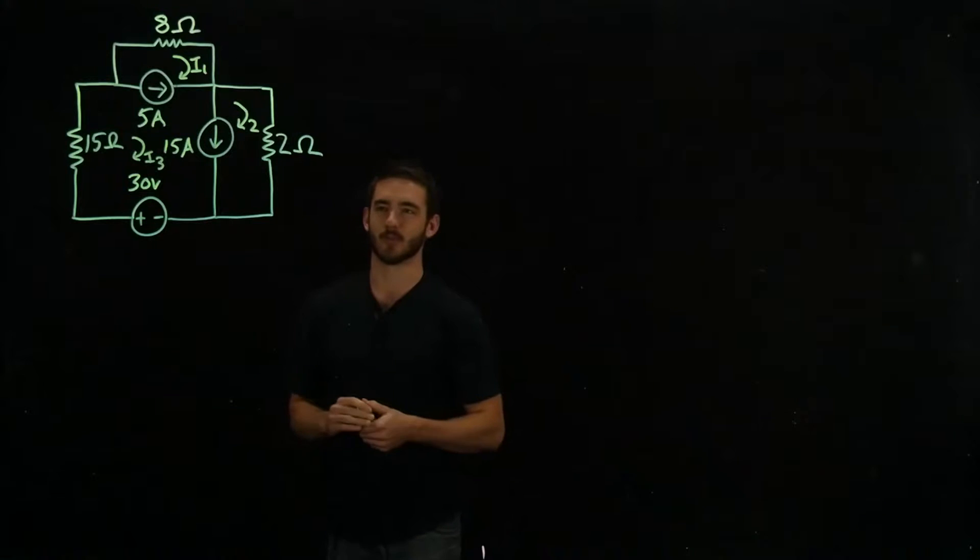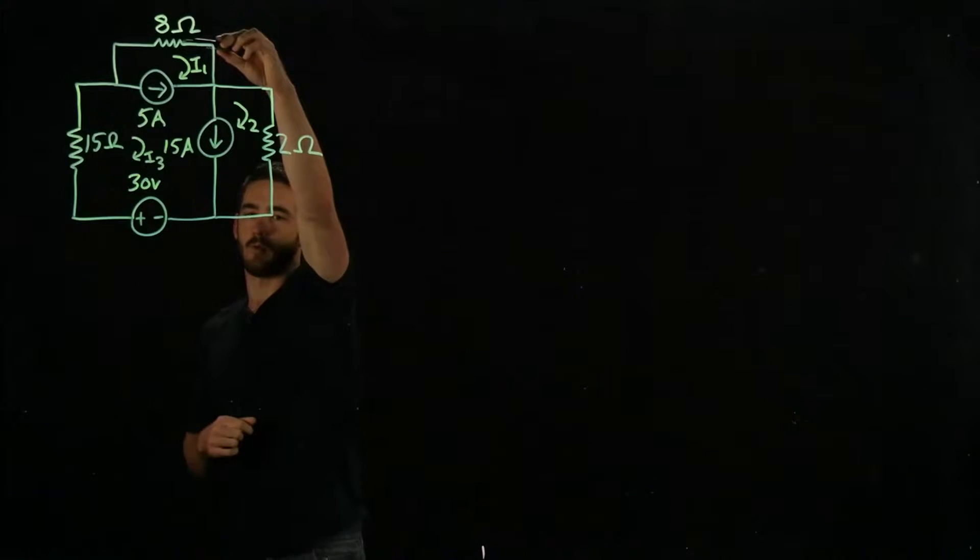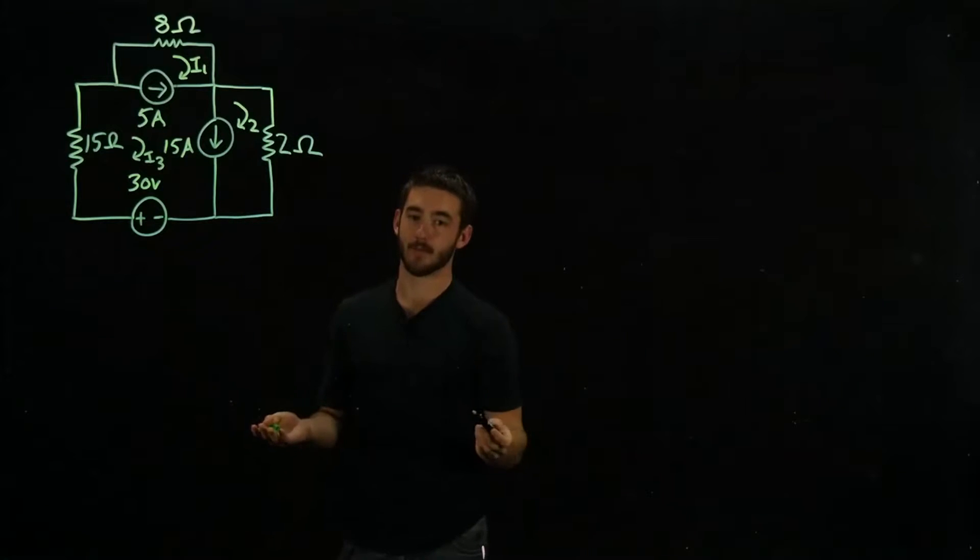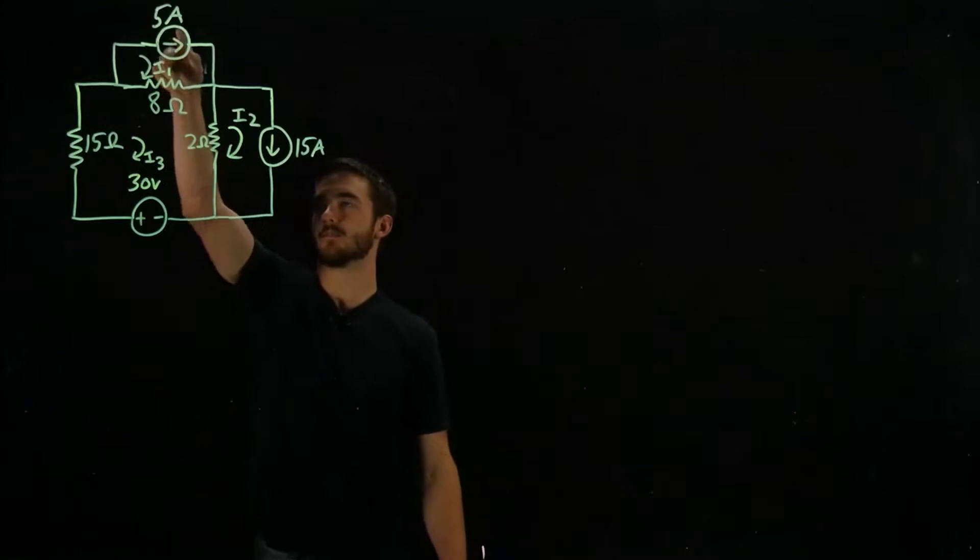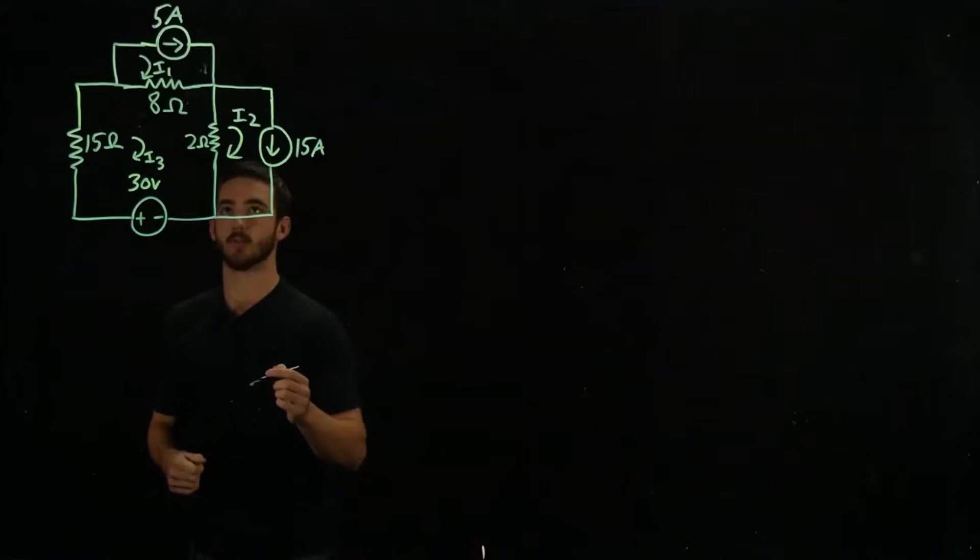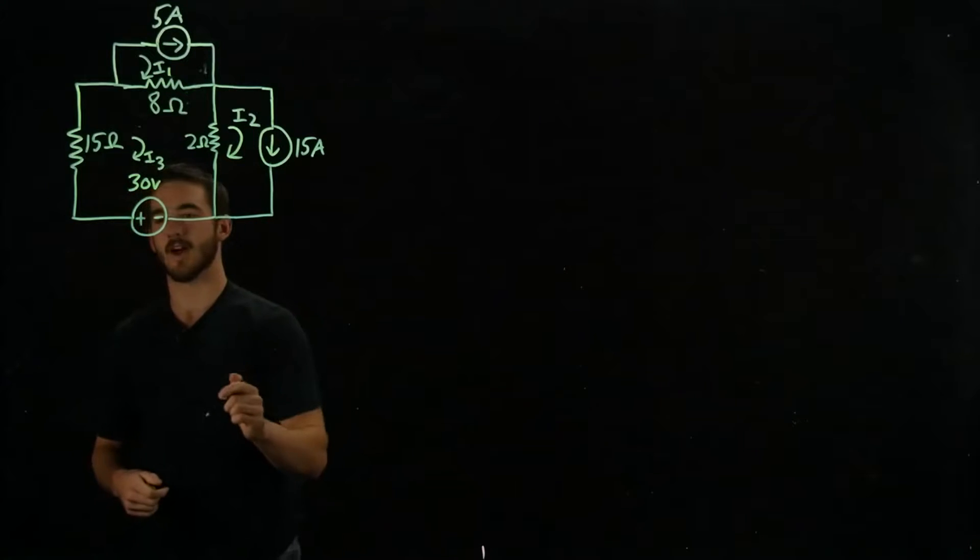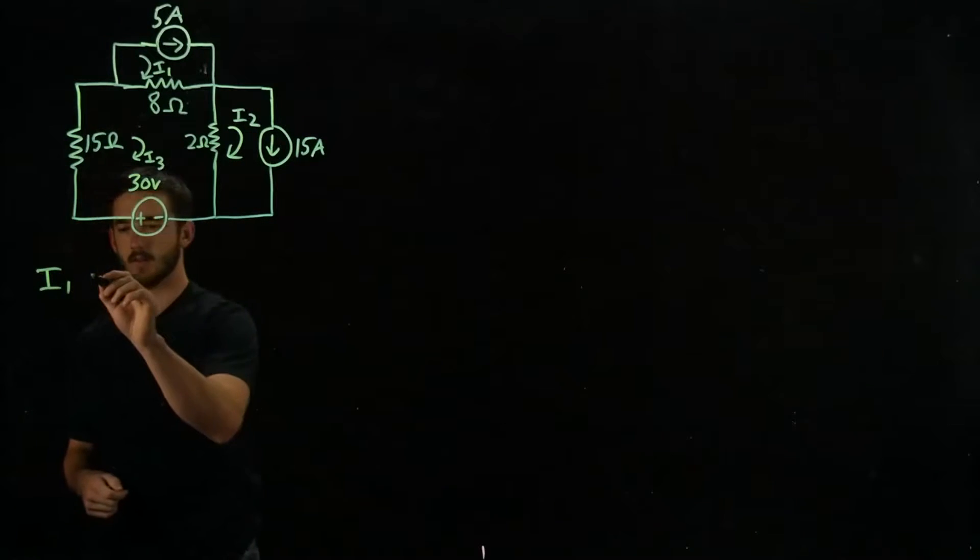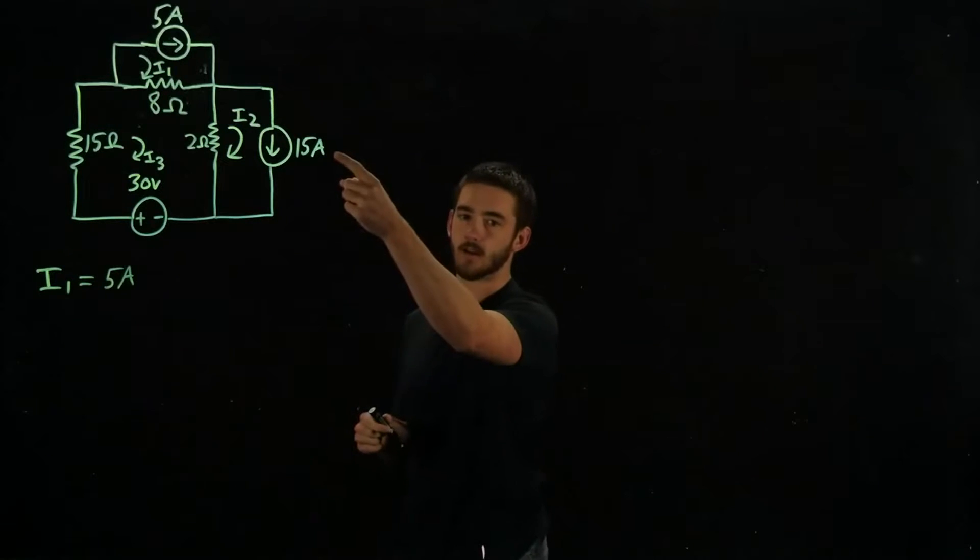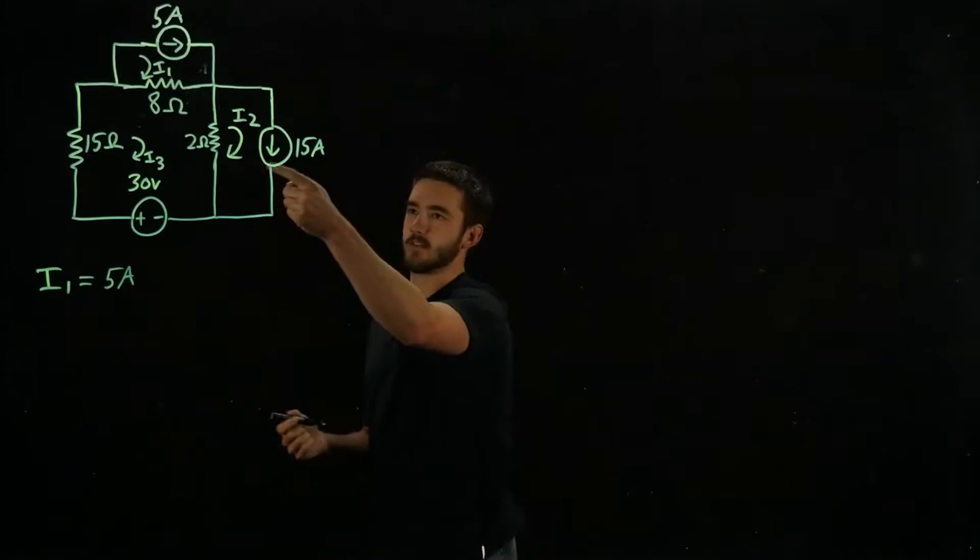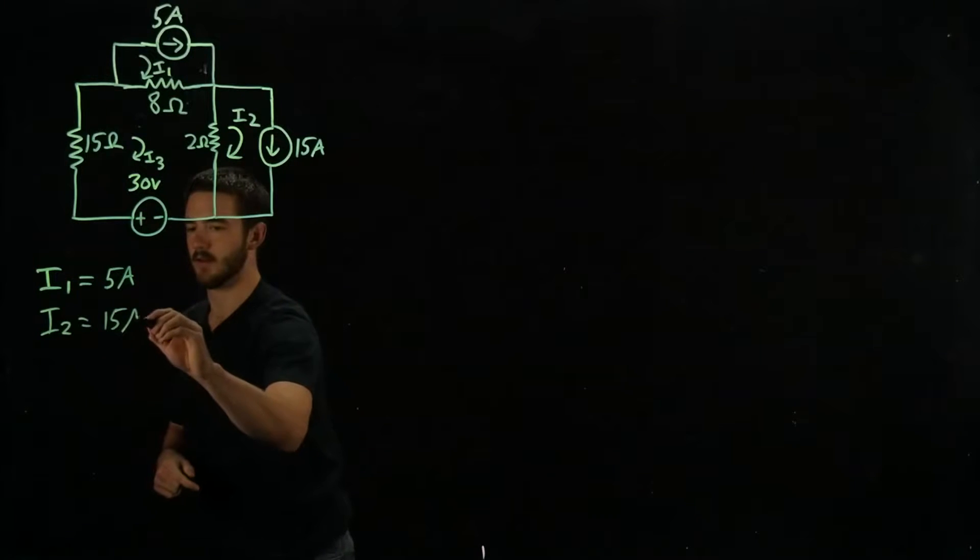There's a couple things we can actually do to simplify this a lot. If you'll notice, we have a current source in parallel with the resistor, and what we can do in this case is we can swap them. So as you can see, we swapped these two here. And now it's really easy to find I1 and I2 because I1 is the current going through this loop and that's just this current source right here. So that's going to be 5 amps. So I1 equals 5 amps. And then same exact concept for right here. We're looking for the current going through this loop and that's just going to be 15 amps. I2 equals 15 amps.